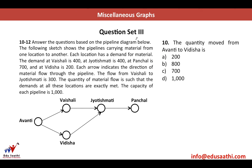Question Set 3: The following sketch shows pipelines carrying material from one location to another. Demand at Vaishali is 400, at Jyotishmati is 400, at Panchal is 700, and at Vidisha is 200. Arrows indicate the direction of material flow, and the flow from Vaishali to Jyotishmati is 300. The quantity of flow is such that demands at all locations are exactly met, and the capacity of each pipeline is 1000.